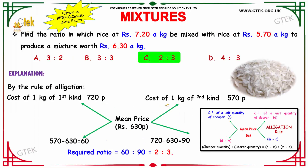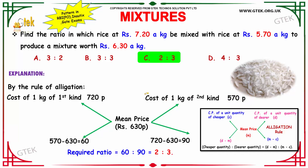Let us see how to apply this logic to solve the question. By rule of allegation, the cost of 1 kg of the first kind is 720 paise. That is, 1 rupee equals 100 paise, so converting 7 rupees into paise gives 700 paise plus 20 paise, which is 720 paise. Similarly, converting Rs.5.70 into paise gives 570 paise. So 570 paise is the cheaper and 720 paise is the dearer.